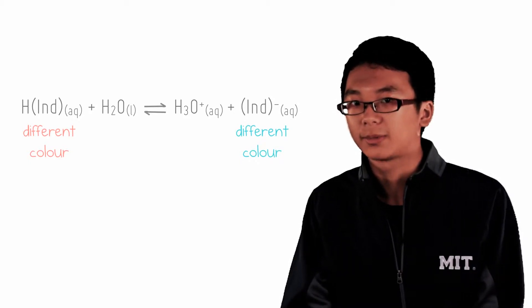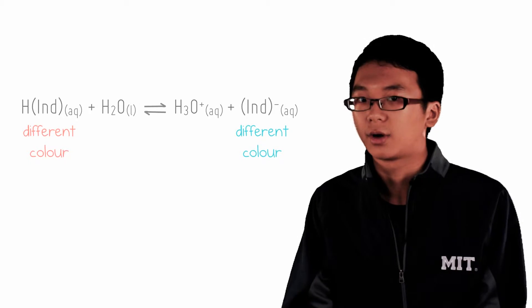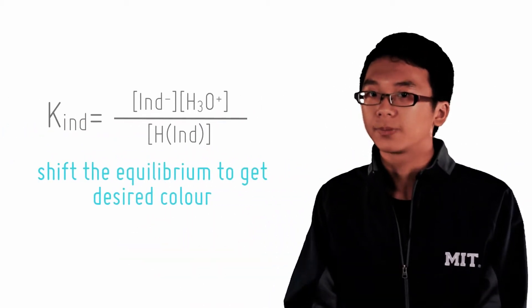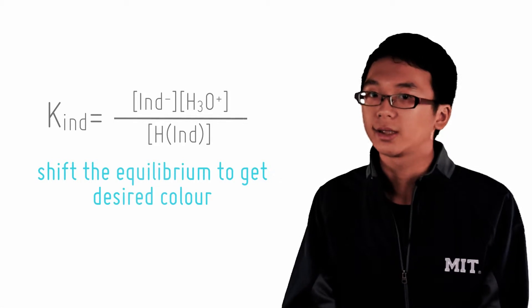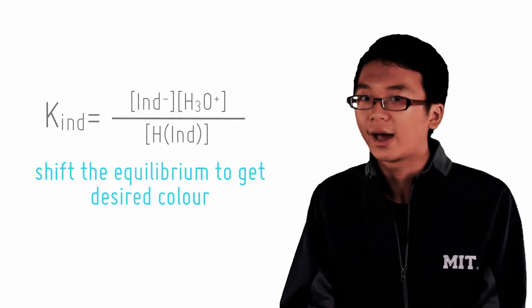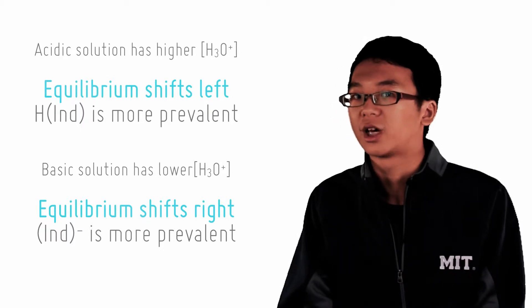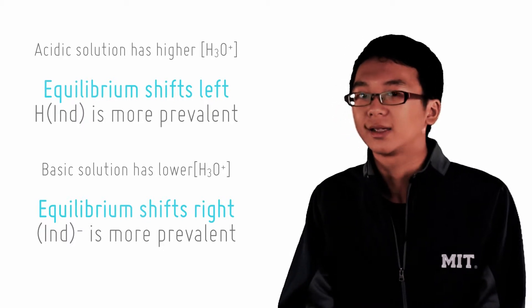How then do we make it exhibit either the undissociated acid or the conjugate base? Here is where we apply equilibrium concepts. If we wanted more of the undissociated acid form, then we must have a high concentration of hydronium in the solution so that we can push the equilibrium backwards by Le Chatelier's principle. That would mean an acidic solution.